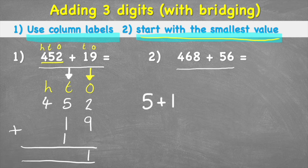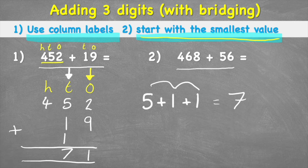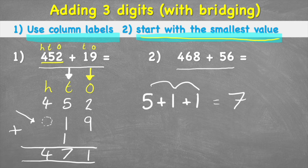Now I can move across and work out all of my tens. I have five plus one plus another one: five plus one is six, plus one is seven. So I put seven in the tens. In the hundreds I have a four on its own. I can put a little zero here as a placeholder — it doesn't change the answer, but it's very good practice, particularly when we get into subtraction. Four add zero is four.